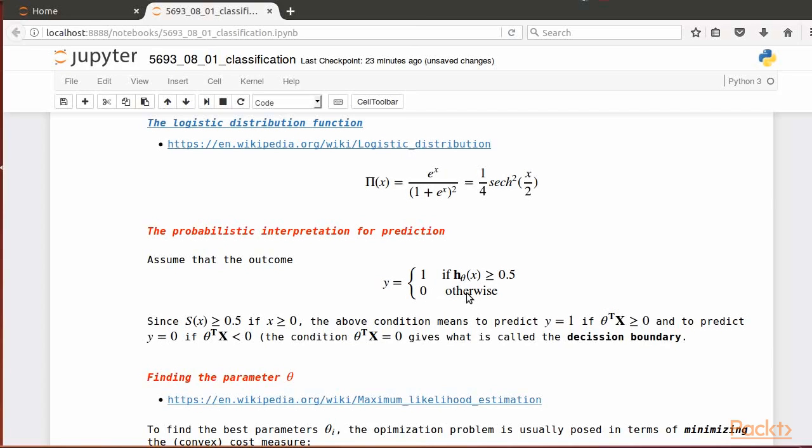This interpretation leads to taking the argument of the hypothesis h of theta of x, or theta transpose times the matrix x, to be greater than or equal to 0 to predict y equals 1, while whenever it is less than 0, we're going to predict y equals 0. In other words, h of theta of x is equal to the probability of obtaining y equals 1.